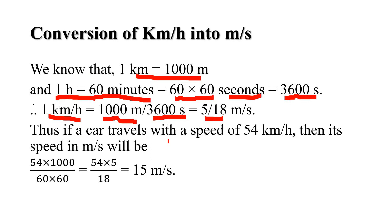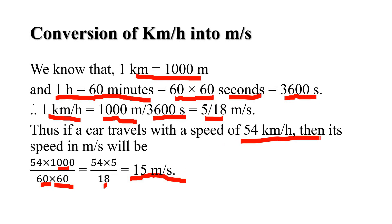Thus, if a car travels with a speed of 54 km per hour, then its speed in meter per second will be: 54 multiplied by 5/18, which equals 15 meter per second. So if a car is traveling at 54 km per hour, its speed in meter per second will be 15 meter per second.